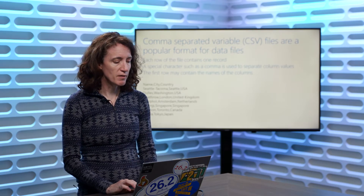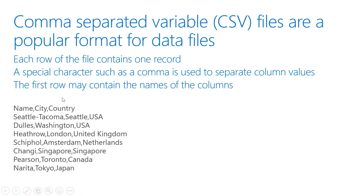For example, you can see here I've got name, city, and country as column headers, and then the name, city, and country for a number of different airports. That might be a CSV file I would use to analyze inside my data.